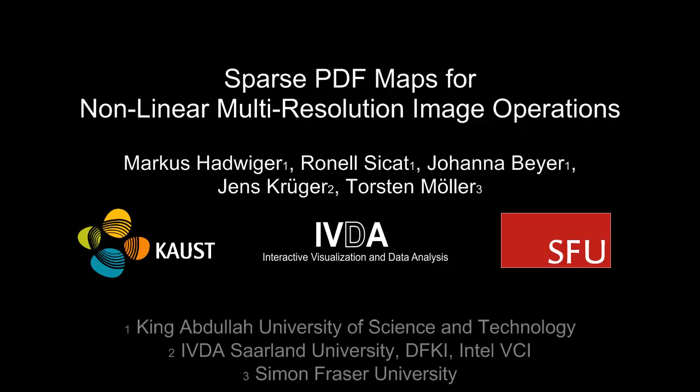This paper presents a new type of multi-resolution image pyramid for gigapixel images called sparse PDF maps. These pyramids enable accurate computation of nonlinear image operations directly in any pyramid level, with proper filtering for anti-aliasing.